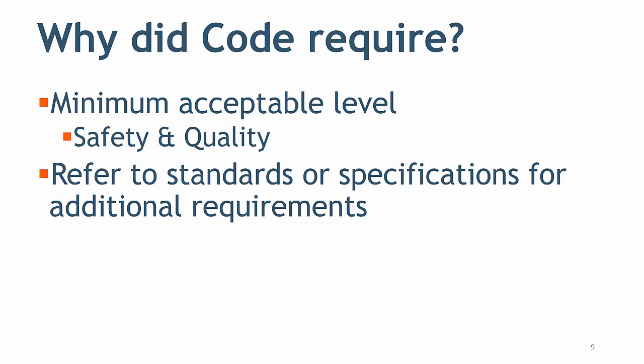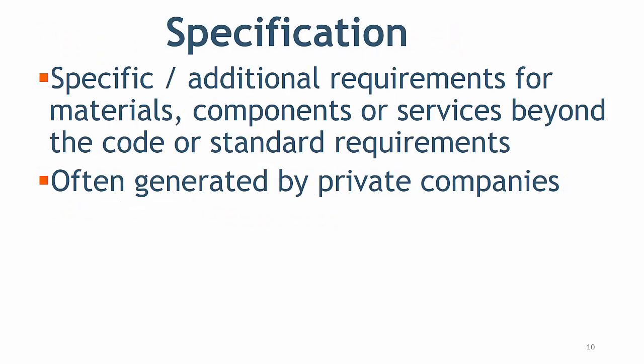Why is code required? Code provides a set of rules that specify the minimum acceptable level of safety and quality for manufactured, fabricated, or constructed goods. Codes also refer out to the standard or specification for specific details on additional requirements that are not specified in the code itself.